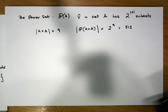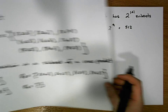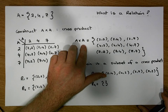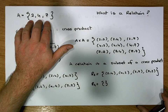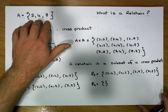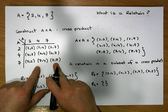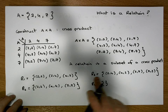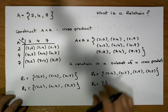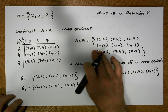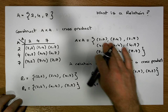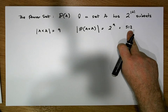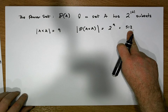So in our small example, where the set A has three elements, the cross product has nine ordered pairs. The number of unique relations we could create by selecting elements from the cross product is 512.